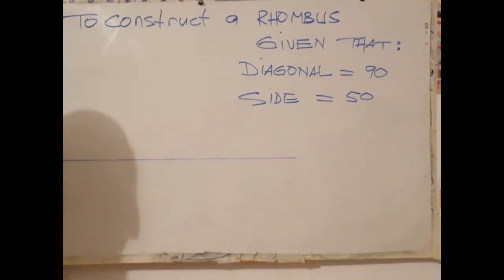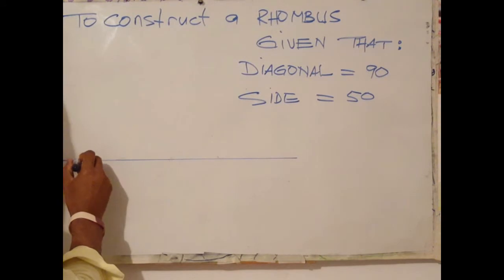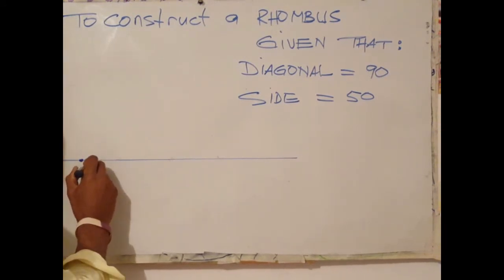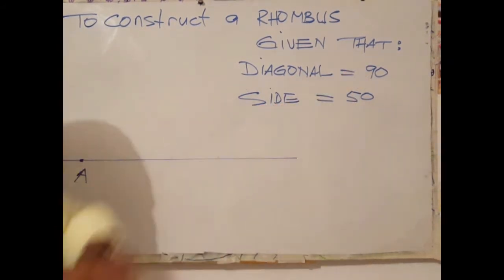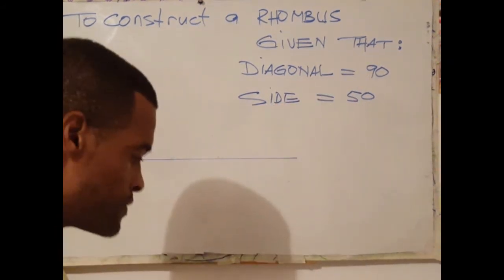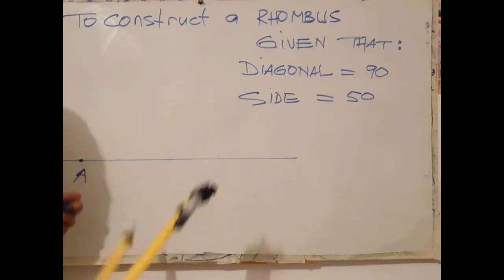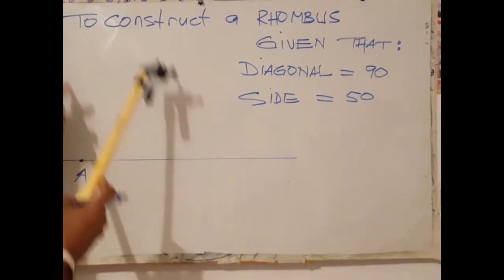The next step is to identify point A or starting point. From point A measure 90 millimeters.